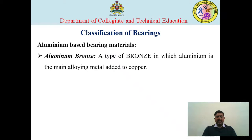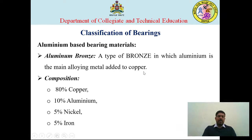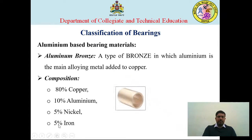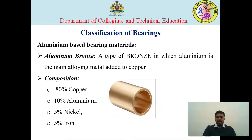Aluminium bronze is another aluminium-based bearing material. It consists of aluminium and a small amount of copper — specifically 80% copper, 10% aluminium, 5% nickel, and 5% iron. A typical figure shows a bearing bush made up of aluminium bronze.